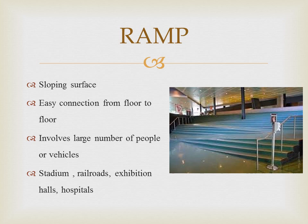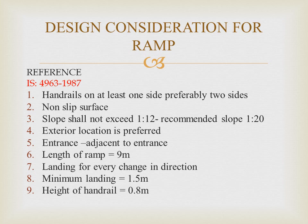Moving on to the next vertical transport system — the ramp. A ramp is actually a sloping surface. It is a way of easy connection from floor to floor. In the case of stairs or escalators, you need to climb steps, but here it is a sloping surface forming an easy connection from floor to floor. It involves the movement of a large number of people or vehicles. It is difficult to carry vehicles on stairs or escalators, but this is made easy with ramps. You can see ramps in stadiums, hospitals, railroads, and exhibition halls. A zigzag type of ramp is shown as an example.